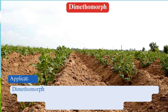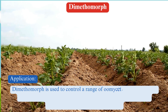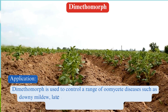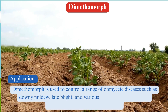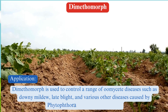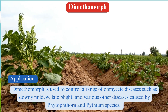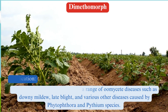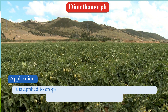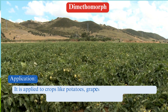Uses: Dimethomorph is used to control a range of oomycete diseases such as downy mildew, late blight, and various other diseases caused by Phytophthora and Pythium species. It is applied to crops like potatoes, grapes, tomatoes, and vegetables.